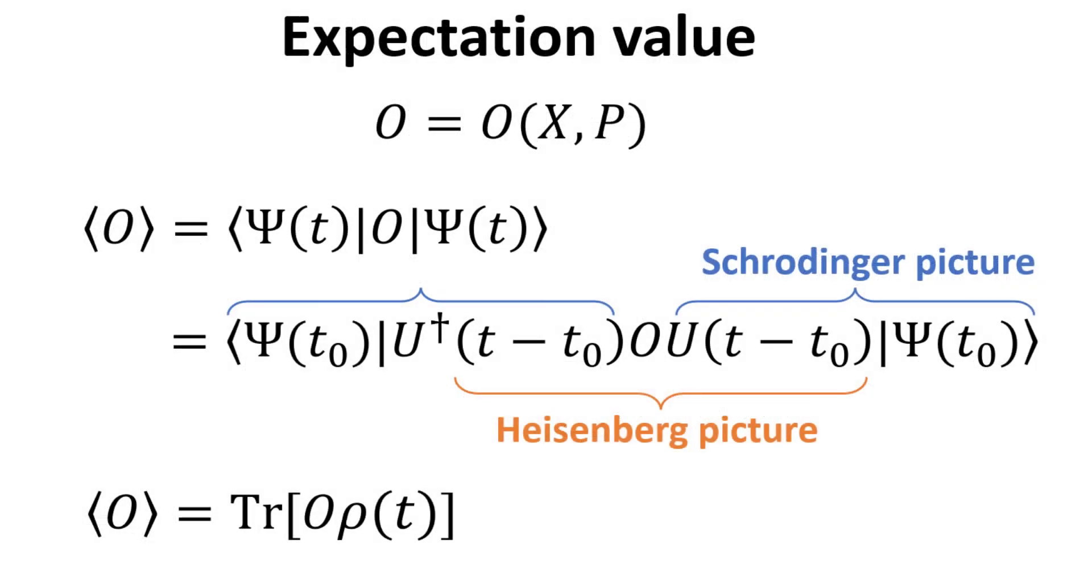Lastly, we discuss the calculation of the expectation value of observables. In the Schrödinger picture, the observable operators are time independent. The expectation value of the observable O at the instant of time t is given by acting it with a bra and ket of the state vector at time t as shown. Knowing the state vector at an initial time t₀, we can use the time evolution operator U to generate the state vector at later time t as shown.